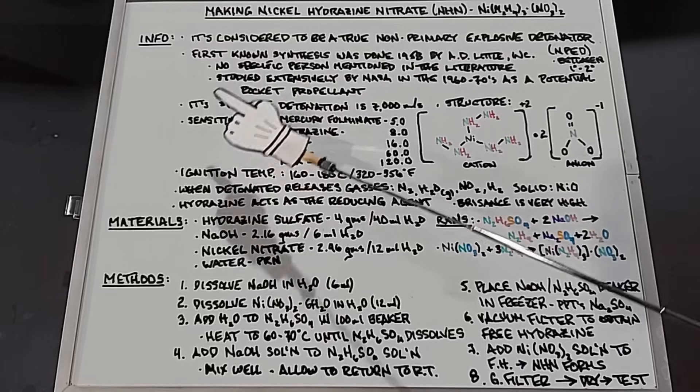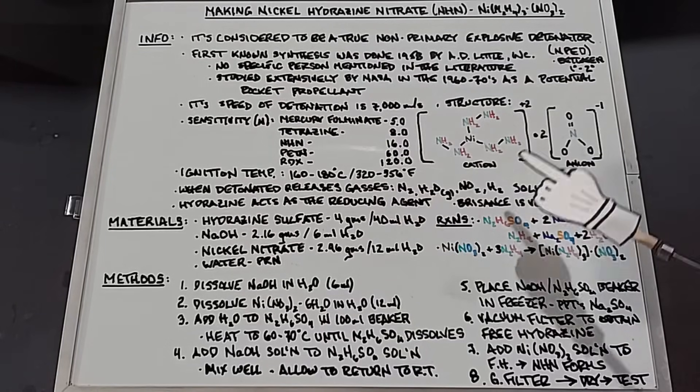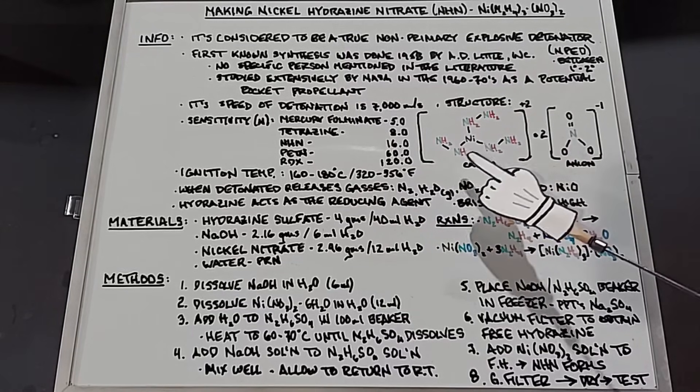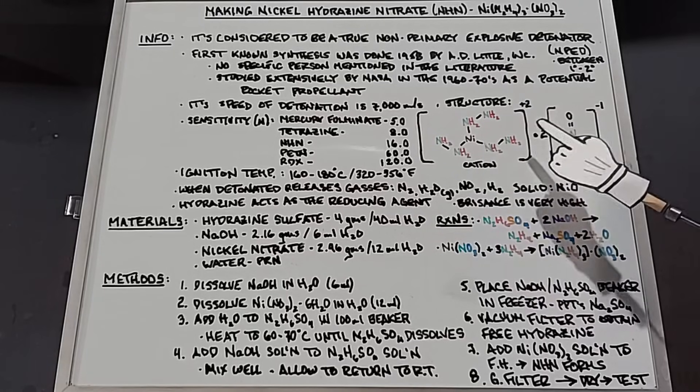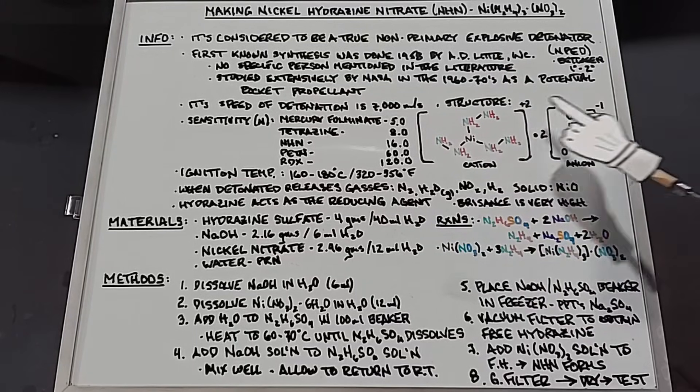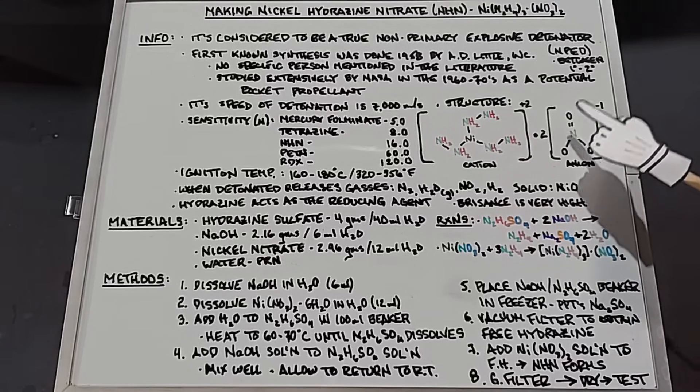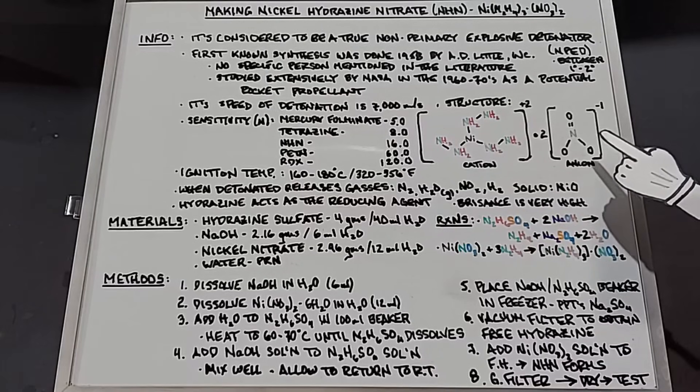It's rather fast. Its speed of detonation is 7,000 meters per second. I drew out a structure here simplified: the nickel atom is in the center, surrounded by six NH2s, and then that has a plus two charge. It's the cation, and it's bonded to two anions here which have a negative one charge, so they balance off. The anion, of course, is the nitrate component with the nitrogen double bonded to an oxygen there and single bonded to two oxygens here, which of course is NO3.